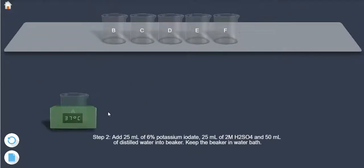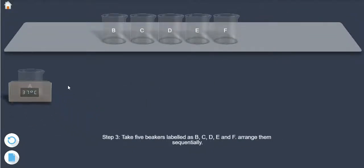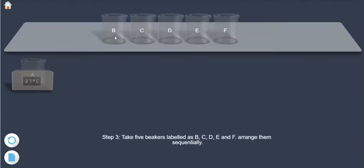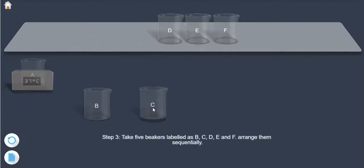Step 3: Take 5 beakers labeled as B, C, D, E, and F. Arrange them sequentially.